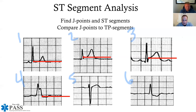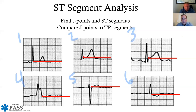Example five's J point is on the isoelectric line with no ST elevation. Example six has the J point slightly lower than the TP segment, indicating a little depression below the following TP segment — which could indicate ischemia. The more 12-lead EKGs you perform, the more comfortable you become picking these findings out, though some like example four remain tricky.